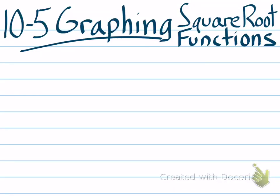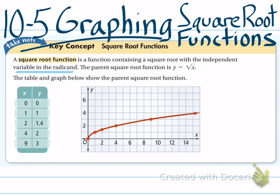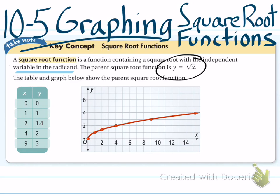This video is going to cover 10-5: graphing the square root function. The first thing you need to know is what the square root function basically looks like. The key thing is to understand that the variable is going to be underneath the radical sign. This is what the square root function looks like: y equals the square root of x.